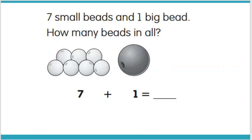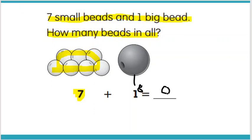Here we have 7 small beads and 1 big bead. How many beads in all? I start with that bigger number — I put 7 in my mind. Here's a group of 7 right there, and then I'm going to add that one more. 7 plus 1 would be 8. So we add that one more bead, which would be 8.